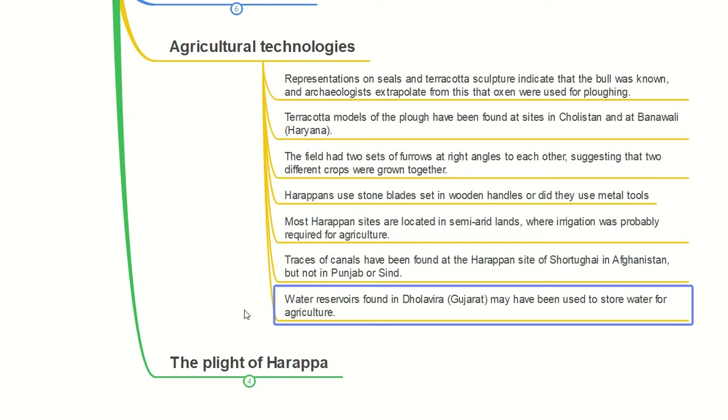Water reservoirs found at Dholavira in present-day Gujarat may have been used to store water for agriculture.